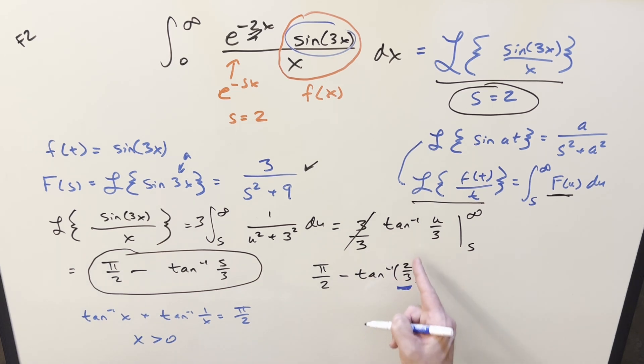x is clearly, or 1 over x, either way this value is clearly greater than 0 right here. And I can rearrange this a little bit if I just subtract arctan of 1 over x on both sides. I can write this as pi over 2 minus arctan of 1 over x.